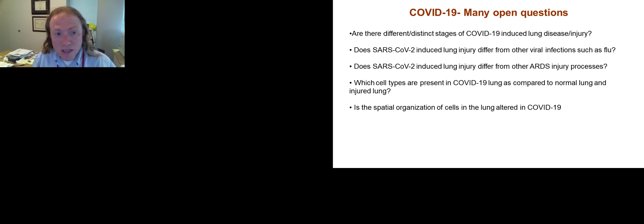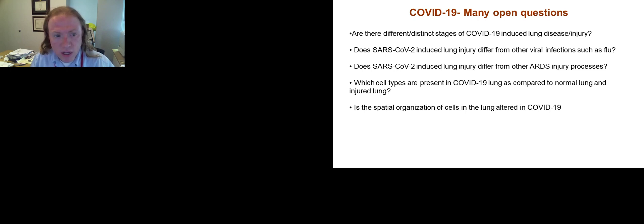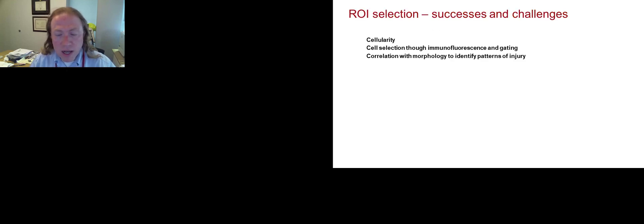We want to understand how this injury process differs from other viral infections such as flu, how this differs from other ARDS, which cell types are present within COVID-19 lung disease compared to normal lung and injured lung, and whether the spatial organization of cells and their relative gene expression is altered in COVID-19 relative to these other disease processes. As Alan mentioned, there are a lot of advantages to using a spatial approach for this type of analysis.